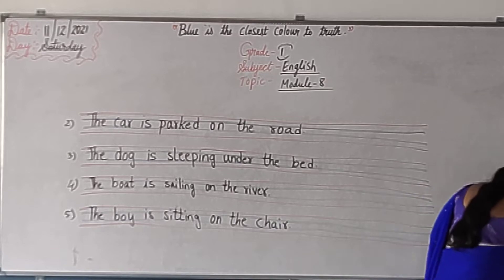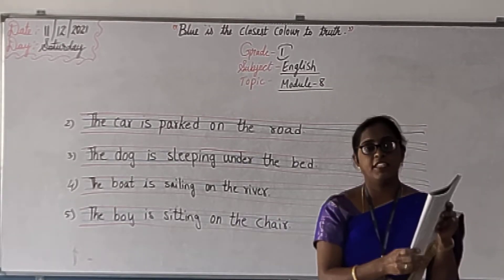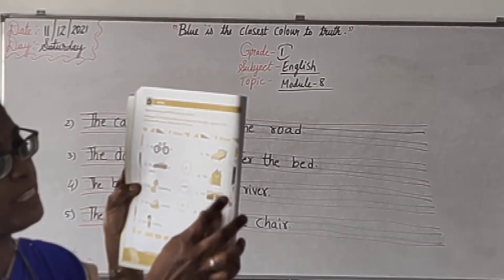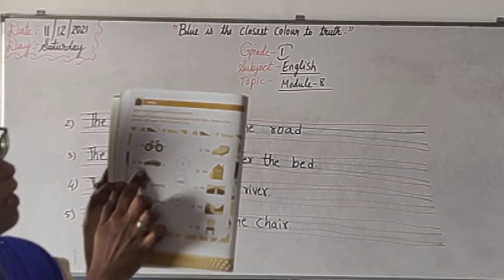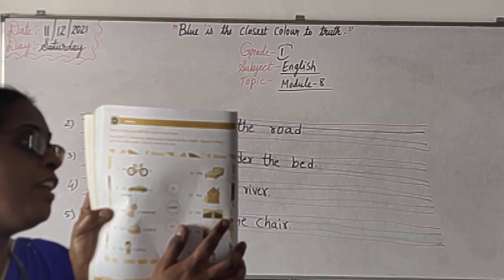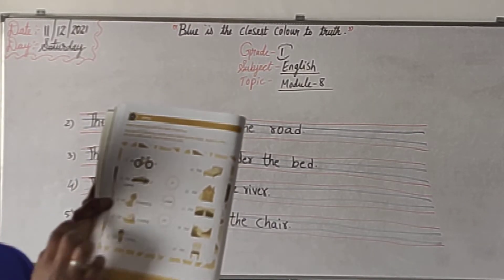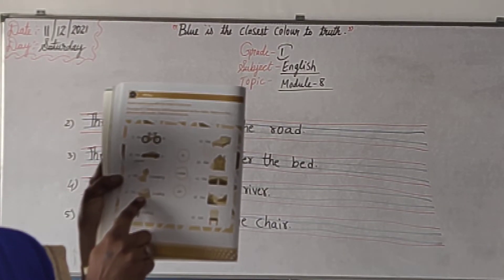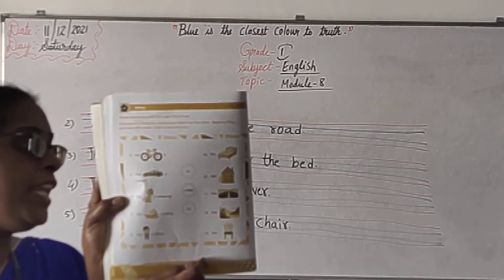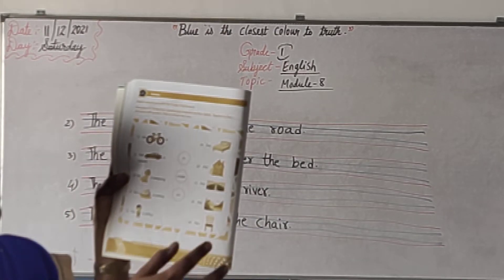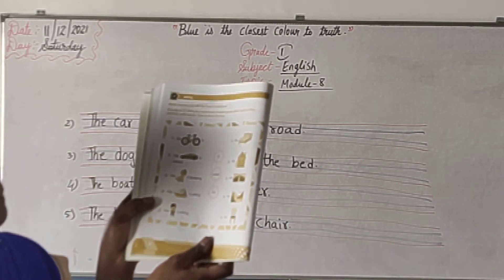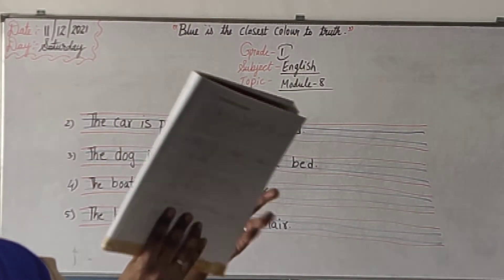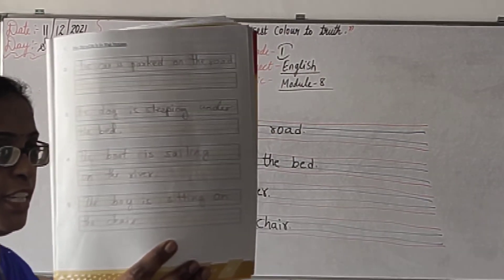See, I will revise. Listen here. The bicycle is in the house. The car is parked on the road. The dog is sleeping under the bed. The boat is sailing on the river — not water, on the river. The boy is sitting on the chair. We have to use these words and make full sentences. Understood? Yes.